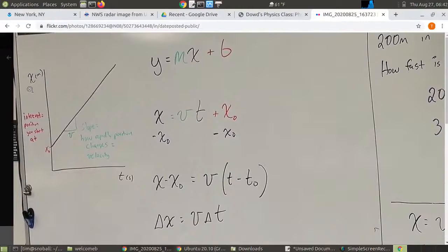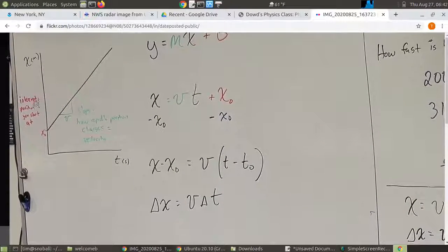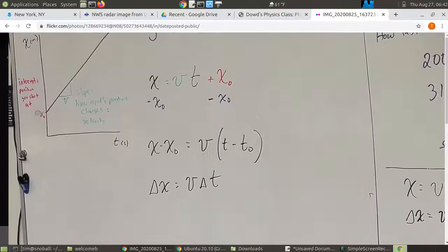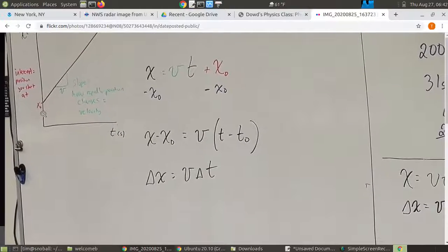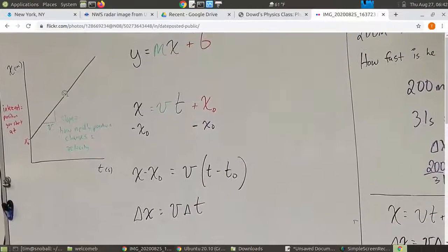So that's hard to see on the video, so you'll have a copy of this photo if you want it. But this graph, which hopefully is familiar, is just the graph of a straight line. The intercept is the place we start and the slope is how fast position changes.